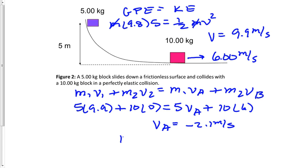So now we just have a kinetic energy conversion back to gravitational potential energy. I'm going to do 1/2 mass times my negative 2.1 squared equals m times 9.8 times h.